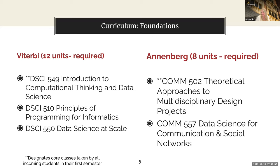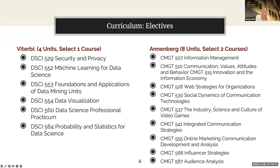Most students take COM 557 in their second year, since it builds on the data science classes you've already taken. For electives at Viterbi, you get one elective course. Some students want to go deeper into machine learning; others are more interested in data visualization or UI/UX. There's also the data science professional practicum if you're interested in an applied research project.